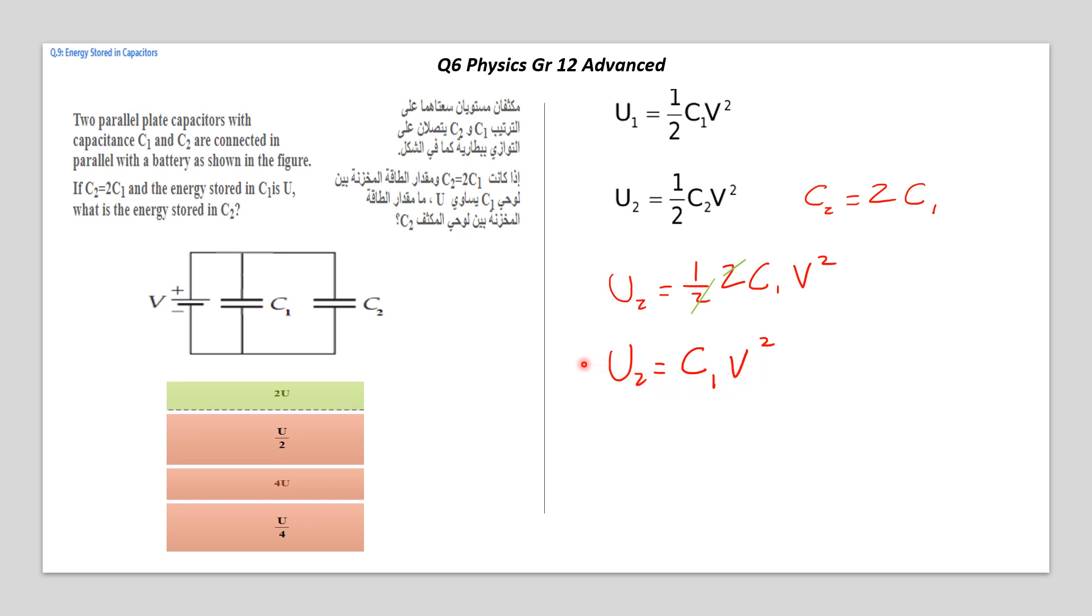Now, take a look or compare U1 to U2. So look here at these two equations. U1 is equal half C1V squared, but U2 is equal C1V squared. So U2 is double that amount. It's double U1. So the correct answer is the first answer.